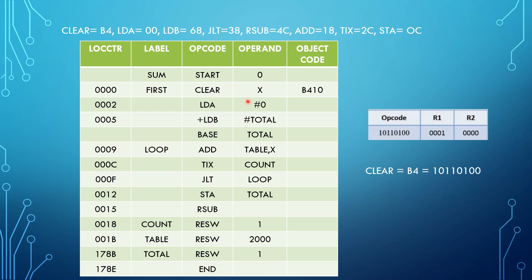First, we have the CLEAR X instruction. It is a Type 2 instruction format. In Type 2, the opcode consists of 8 bits, R1 register has 4 bits, and R2 has 4 bits. The CLEAR mnemonic value is B4. R1 is X, so the X register value is 1, and R2 is 0. Therefore the object code is B410.